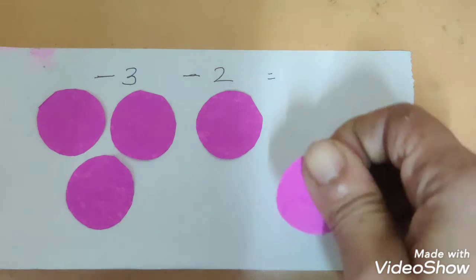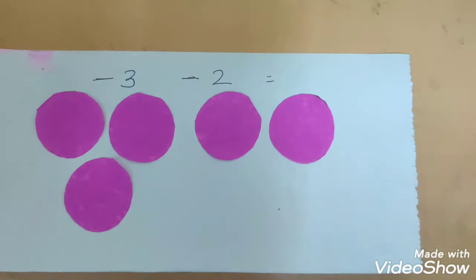So, you have 3 of the pink circles and 2 of the pink circles. Is there anything of a different color which is there on the paper? No, it is all pink in color.